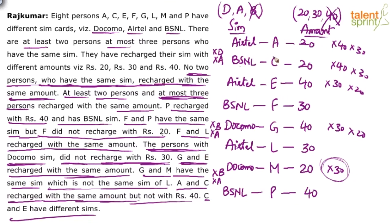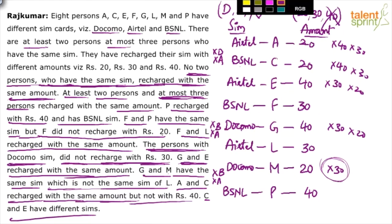In the final solution, in the order A, C, E, F, G, L, M, P — the SIM cards are Atel, BSNL, Atel, BSNL, Docomo, Atel, Docomo, BSNL. The recharge amounts are ₹20, ₹20, ₹40, ₹30, ₹40, ₹30, ₹20, ₹40. Minimum two and maximum three everywhere — two ₹30s, three ₹20s, three ₹40s — and no two persons with the same SIM share the same recharge amount. All conditions are satisfied. That is the final solution.